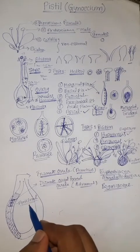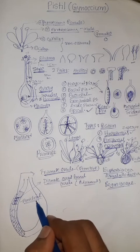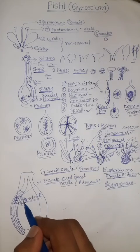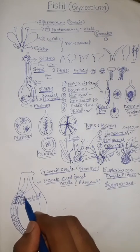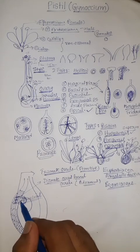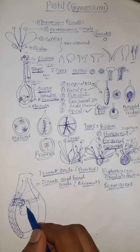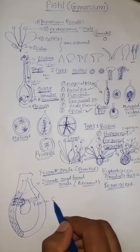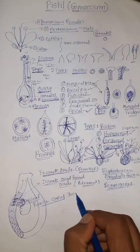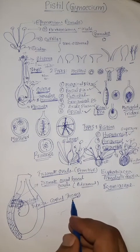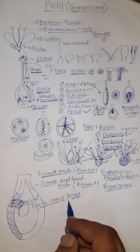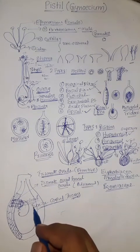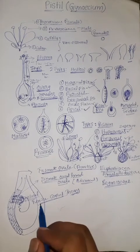After de-differentiation, the cells from either the second or third layer start to divide mitotically in a periclinal manner, producing a mass of tissue that eventually forms the entire ovule. This cell differentiation is very similar to the tunica-corpus theory.